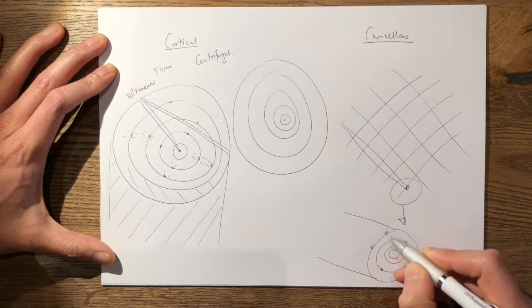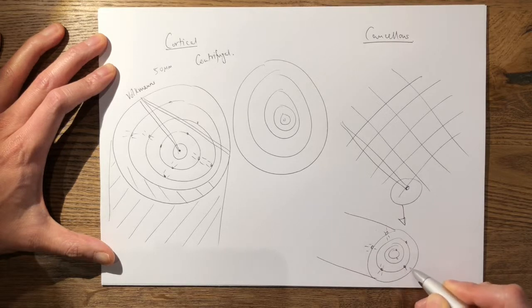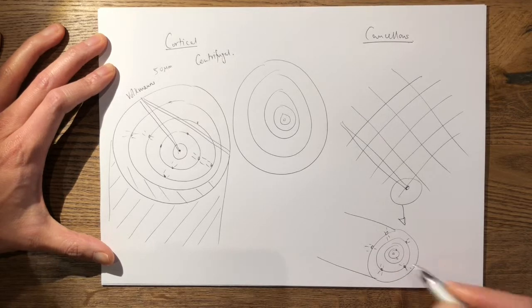With canaliculi as well like cortical bone, however the main difference is that it does not have a central Haversian system.